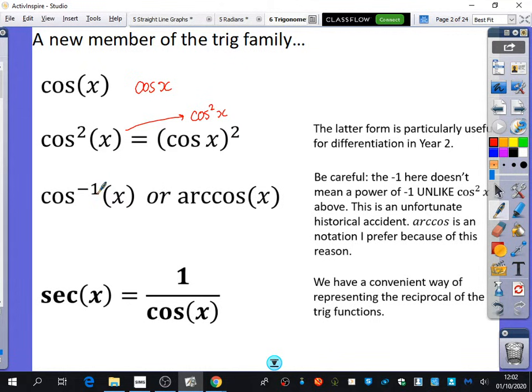Arccos is actually the notation that I prefer because of this reason, because this minus 1 is actually talking about doing the inverse. When you're doing inverse functions, the minus 1 is meaning go in reverse. But it confuses us with the fact that the power of minus 1 actually means reciprocal. So this one does not mean the reciprocal of cos. The thing that means the reciprocal of cos is called sec x, and sec is actually short for secant. We have a convenient way of representing the reciprocal of the trig function, so the reciprocal of 1 over cos x is called sec x.